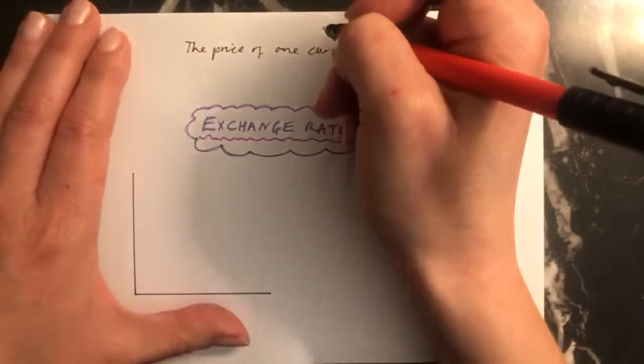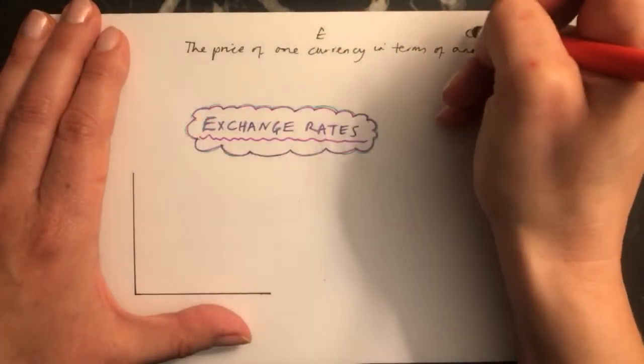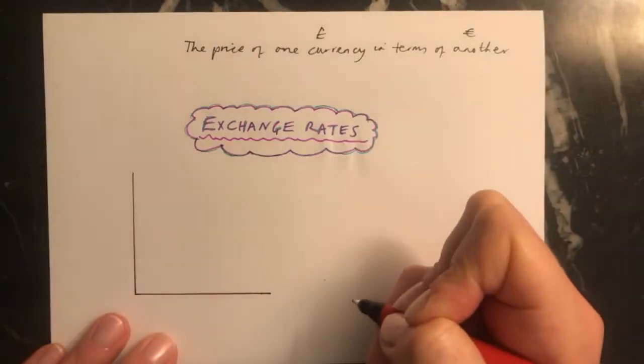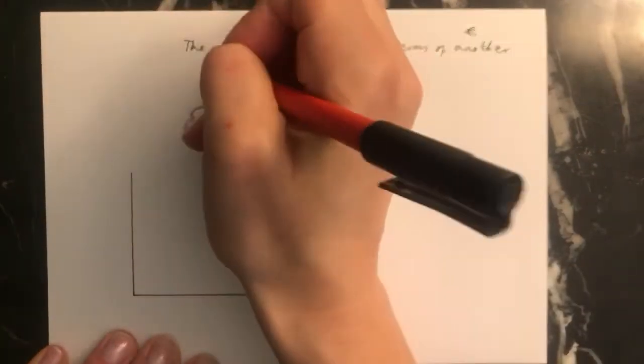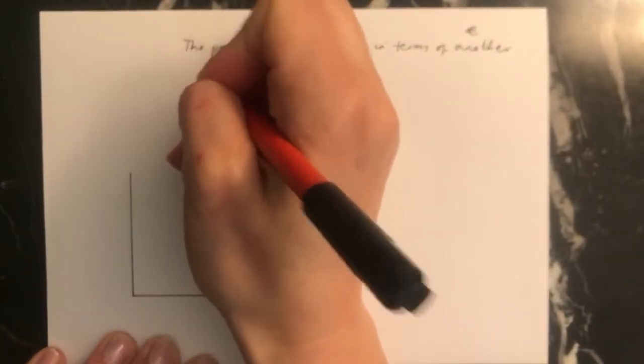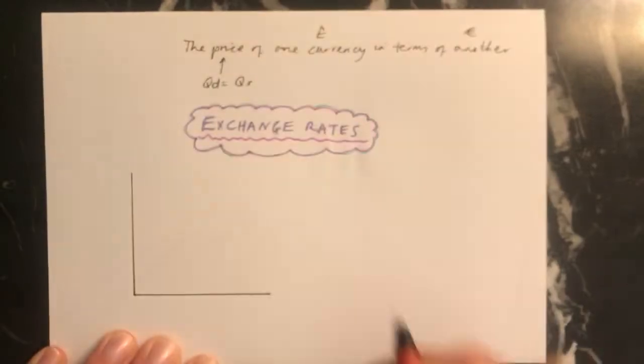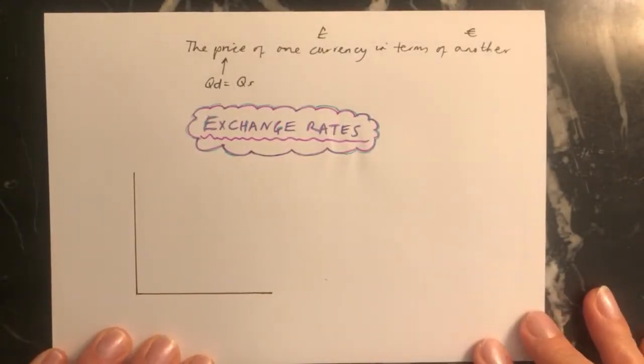So for example, you might be looking at the price of pounds in terms of euros. And as we know, for anything, when you want to work out the price of something, you need to find out where the quantity demanded is equal to the quantity supplied. And you can do that in a normal demand and supply diagram.